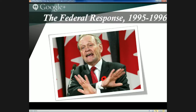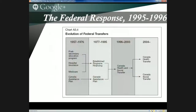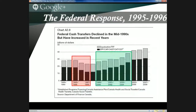The government did establish some national standards to prevent a race to the bottom, but overall the effect of the 1995-96 cuts was to transform shared cost programs into conditional grants and massively reduce the amount of funding flowing to provinces. You can see a massive, unilateral reduction in spending from 1995-96 through 1997-98, after which the federal government began reinvesting through transfers and receiving public credit for doing so. The Chrétien government and his successor Paul Martin received great public accolades for reinvesting and saving the Canadian healthcare system.